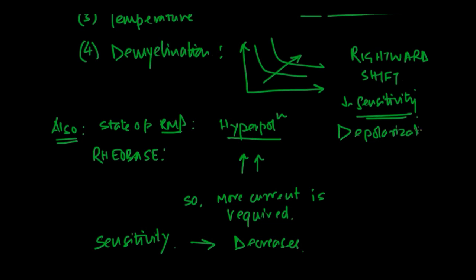If depolarizing current is applied, the rheobase goes down and less current is required to stimulate the nerve, increasing sensitivity. That is why in a peripheral nerve stimulator, you apply the positive electrode to the patient and negative to the needle, causing depolarization and requiring less current to stimulate the nerve.